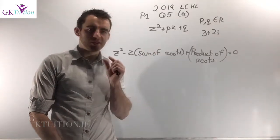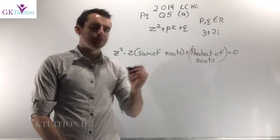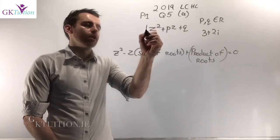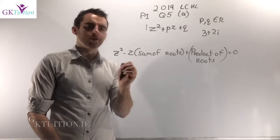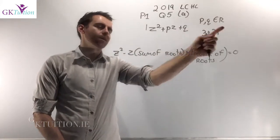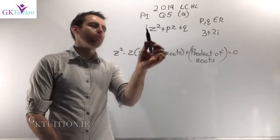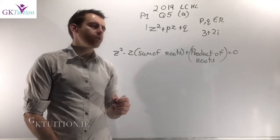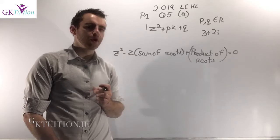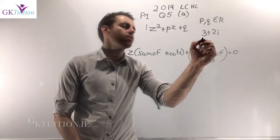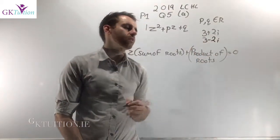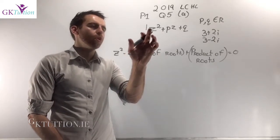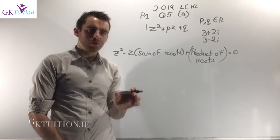It's a quadratic equation, which means it only has two roots, and one of them is 3 + 2i. This is really important: the coefficient of z² is 1 (real), the coefficient of z is p (real), and the constant is q (real). Because all three coefficients are real, the roots are conjugates of each other. So if one root is 3 + 2i, the other root is its conjugate — you just change the sign of the imaginary part — giving 3 − 2i. That only applies because 1, p, and q are all real numbers.